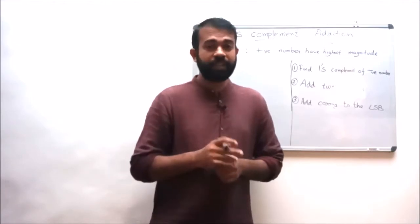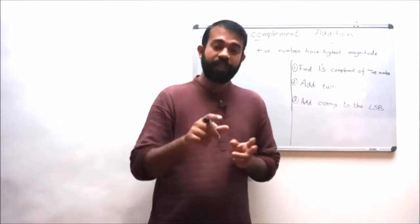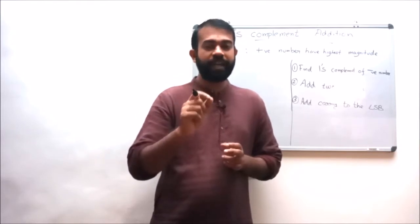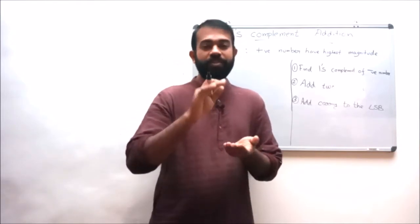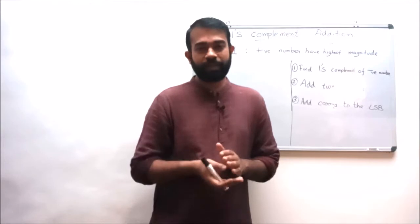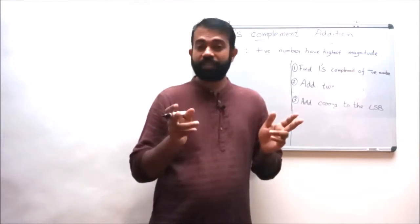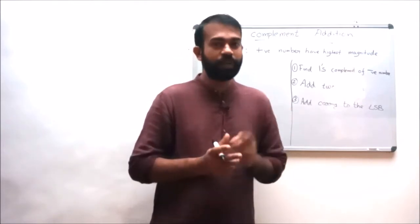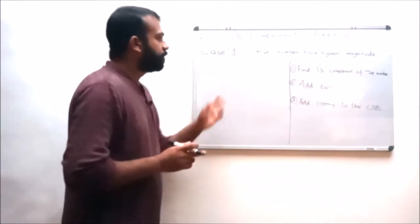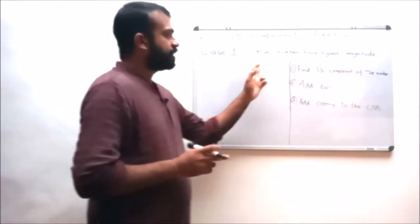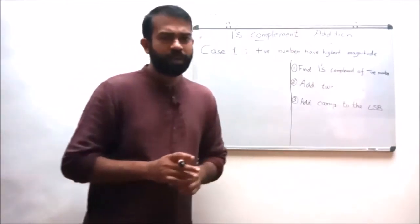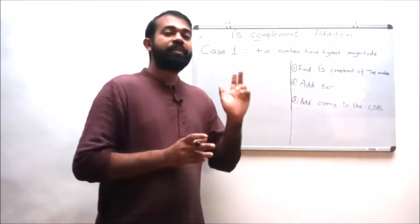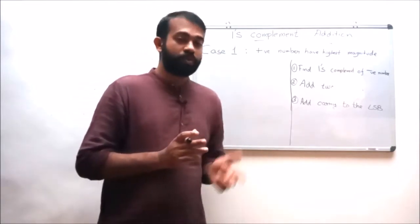The first case is where there are two different numbers and the greatest number is the positive number while the lesser or smallest number is the negative number. That is, the highest magnitude number is the positive number — that is Case 1. So Case 1 is: the positive number is having the highest magnitude. For this addition there are three different steps or rules.